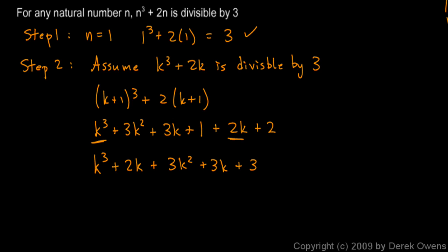Now you might see your solution here. k cubed plus 2k, remember right there. I'll write that again. And k cubed plus 2k, that's divisible by 3. Remember that was our assumption. k cubed plus 2k is divisible by 3.